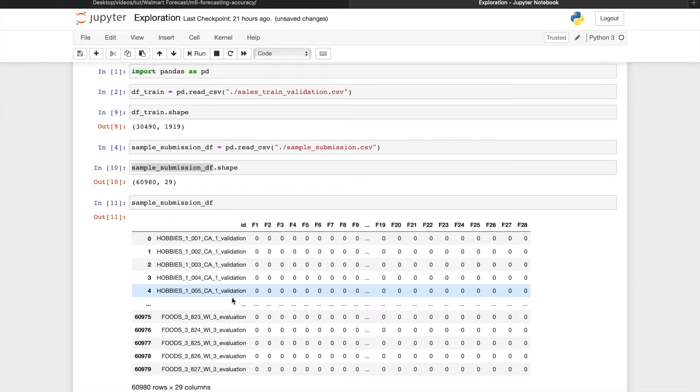When forecasting for validation points, we're essentially making forecasts for 28 days between days 1914 and 1941. Forecasts for these evaluation points are made for 28 days between 1942 and 1969.